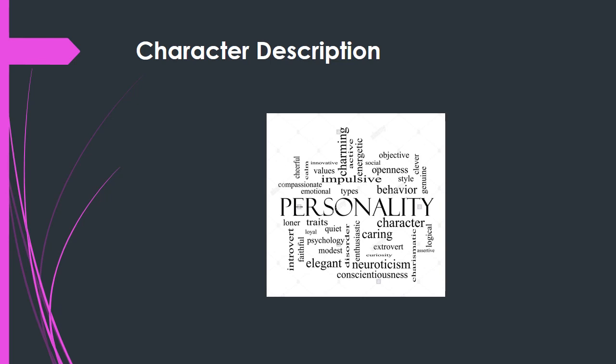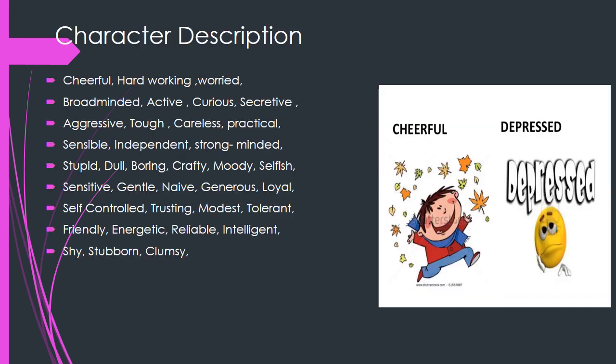Next we can see character description. Physical description anyone can watch and describe, but character description is only possible if we observe the person many times or work together with them. Some character description words are: cheerful, very happy, hard-working, worried, broad-minded, active, curious, and secretive. Secretive people are very reserved — they don't want to share their own opinions or activities.